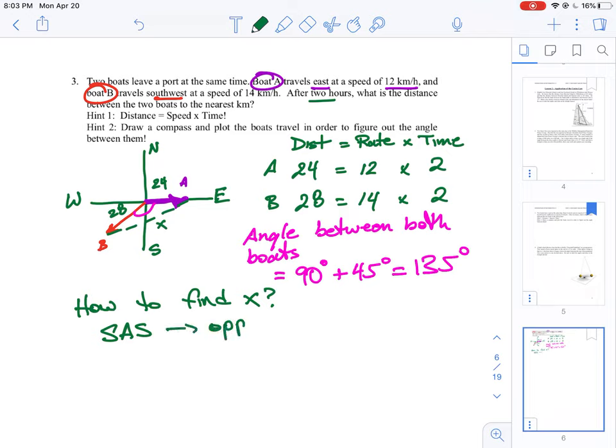This is the classic case for the cosine law. We can just simply say that x squared, which is the side we're trying to find, is equal to the sum of the squares of the two legs.